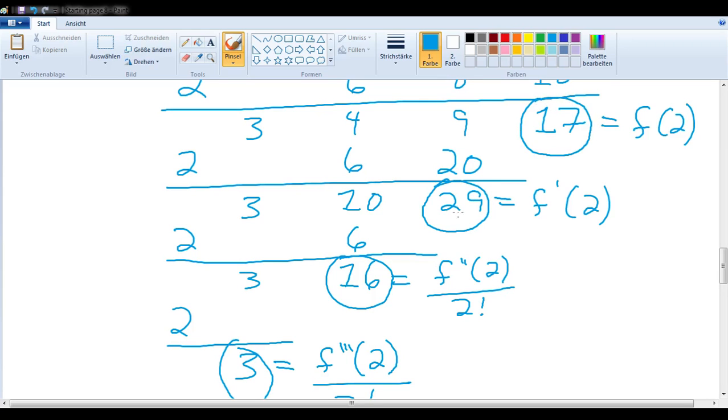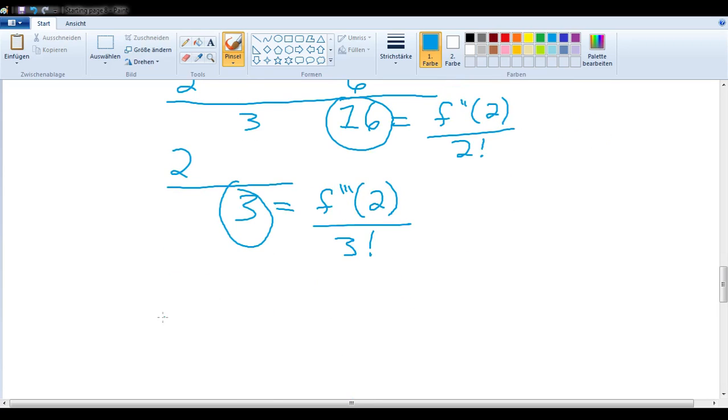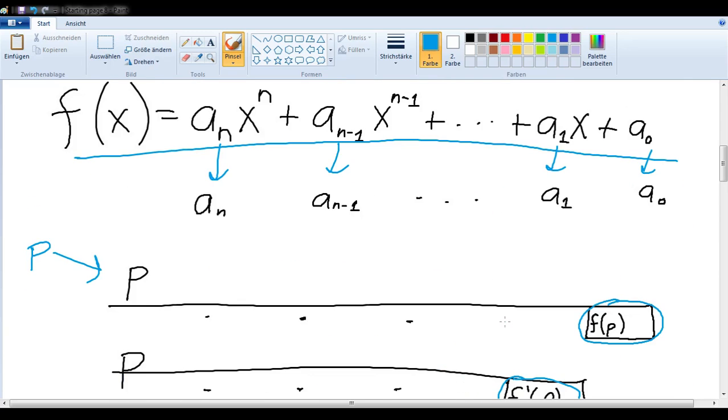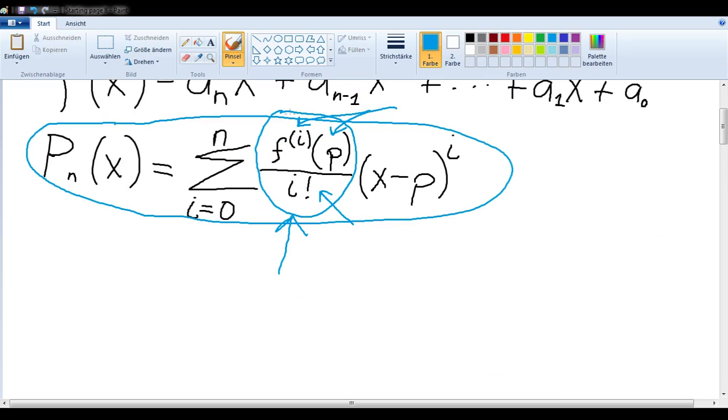So let's write those out: 17, 29, 16, and 3. As we saw above, once we've written in these, the only thing we need to do is just multiply by x minus p to the i-th power. So let's do that.